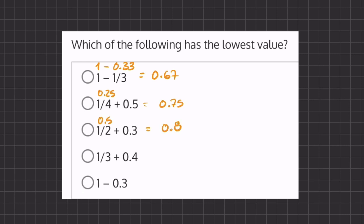1 third is going to be like 0.33. We're going to keep it at two decimal places. And if we add that to 0.4, we'll get 0.73.